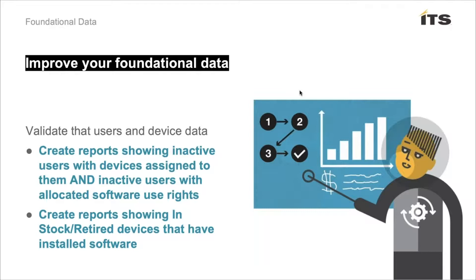Number one: improving your foundational data. Foundational data is key to any CMDB or SAM activity. Some things that cause the most problems with software asset management are when user and device data is incomplete or incorrect. A simple way to improve that data is creating reports showing inactive users or devices that have software use rights tied to them — you know you have allocations per device or per user — so ensuring your report pulls in that information is critical.